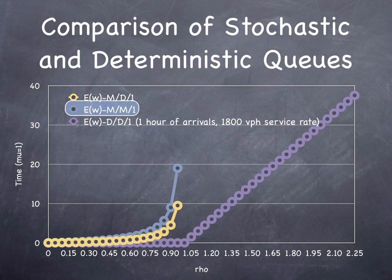We have a deterministic model which says there's no delay until you get to a rho greater than 1. We have a stochastic process which says that the delay goes to infinity as rho approaches 1. Our deterministic process is shown in purple here. No delay until rho equals 1 and then it takes off. Our under-saturated examples take off before rho equals 1.